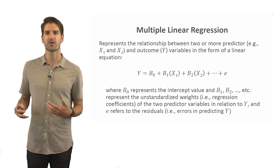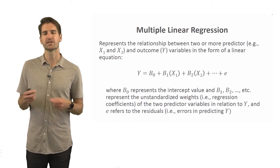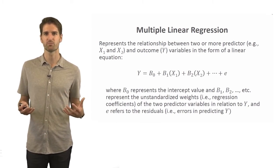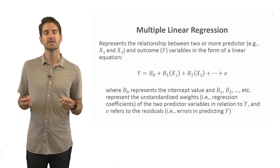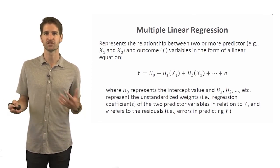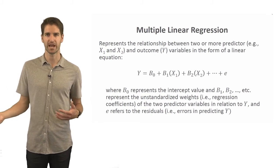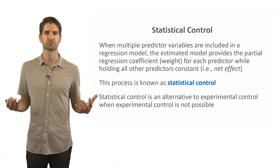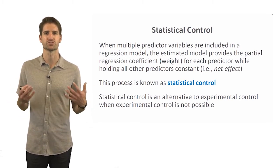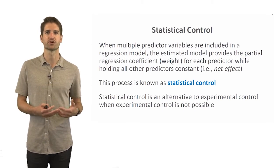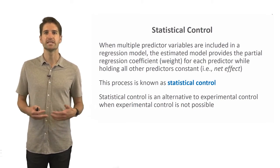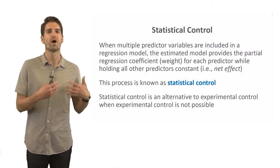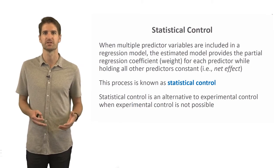The residual error is essentially the extent to which the line of best fit or regression equation doesn't perfectly predict every single case. When we use multiple linear regression with two or more predictor variables, we introduce statistical control. The estimated model provides the partial regression coefficient or weight for each predictor while holding all other predictors constant that are in the model — in other words, the net effect.